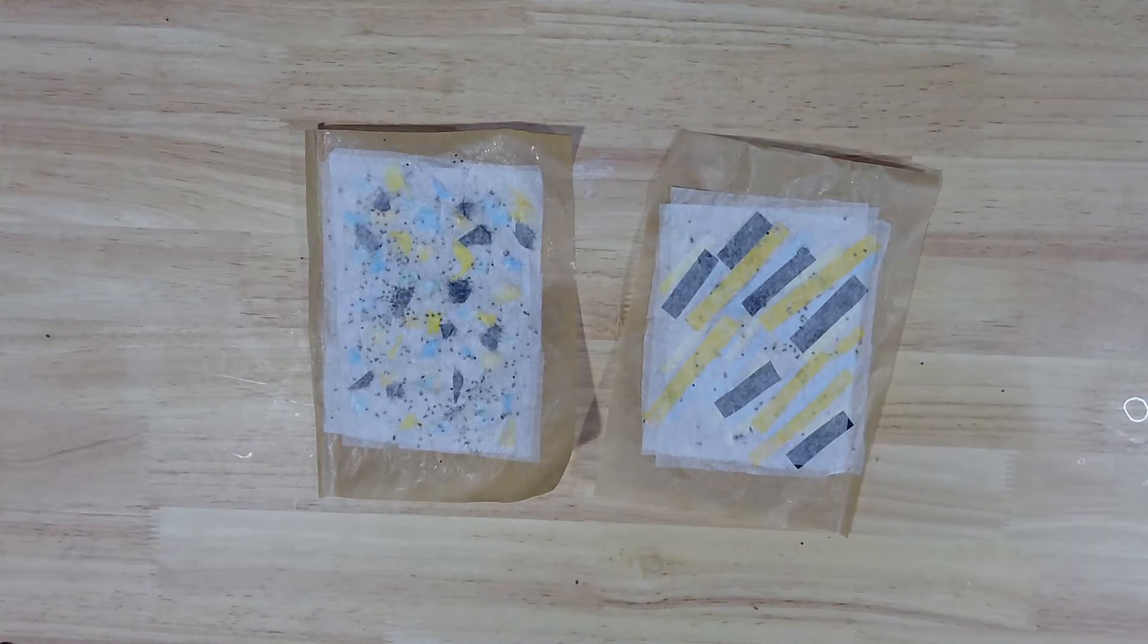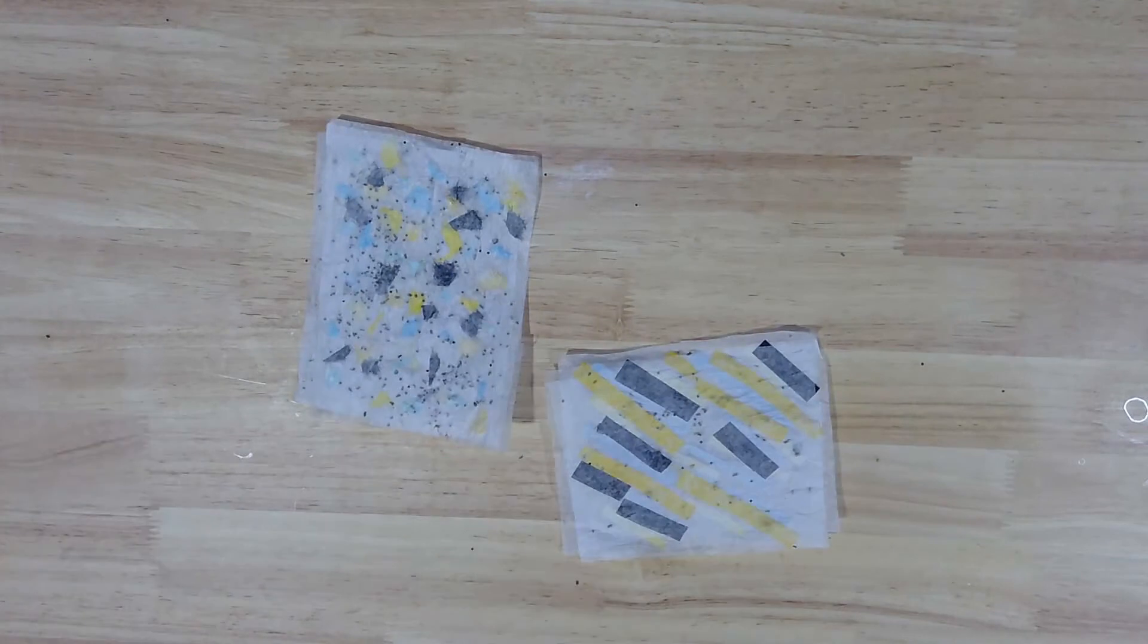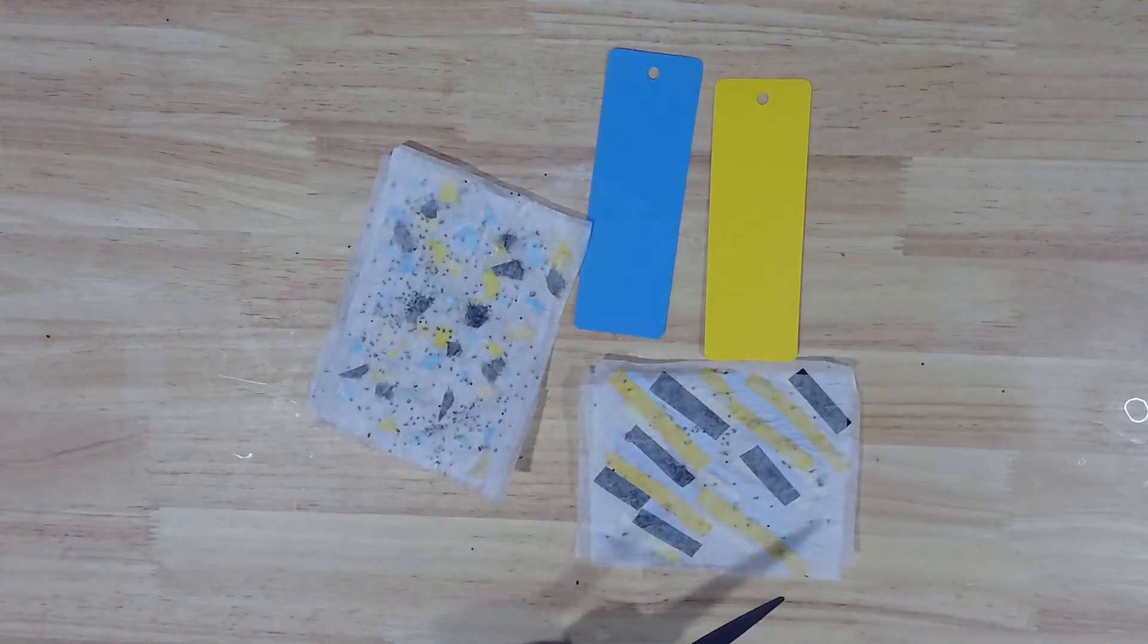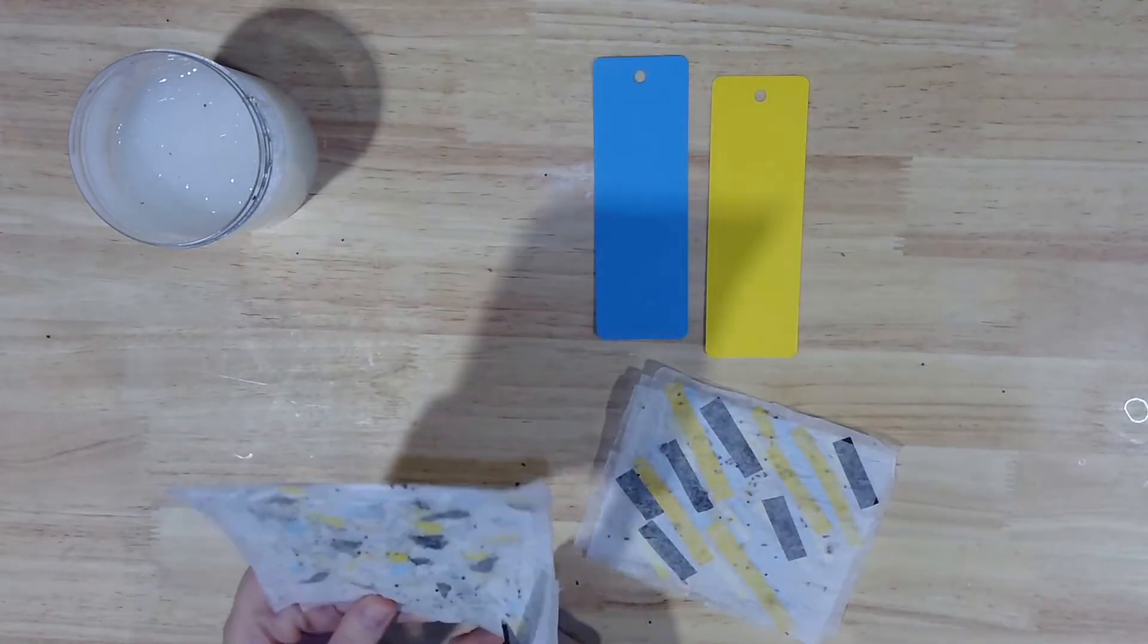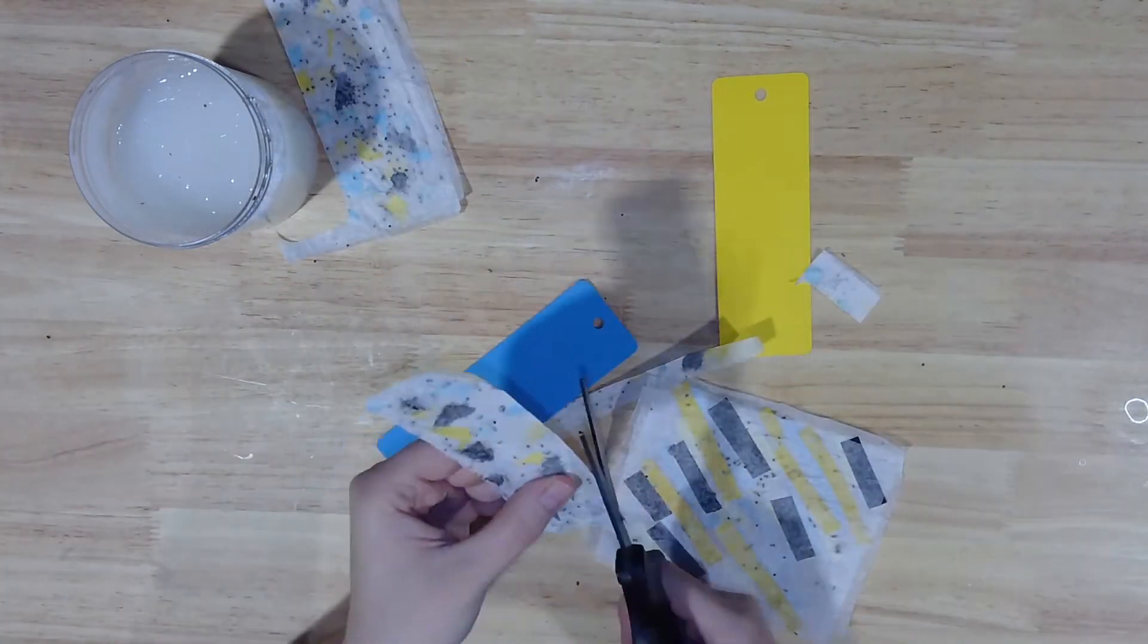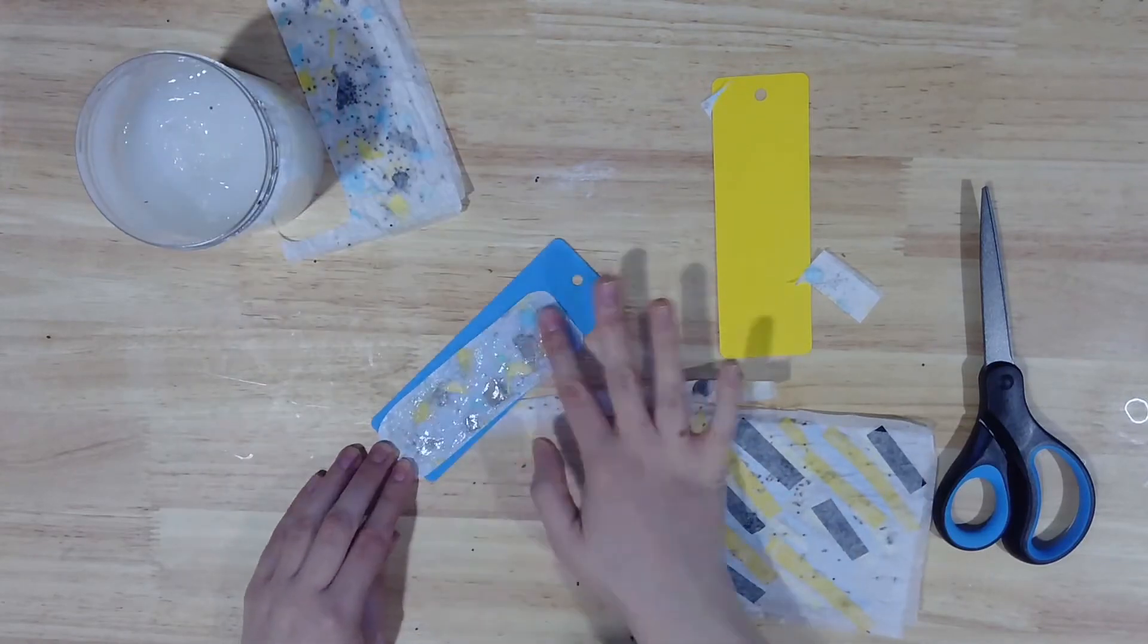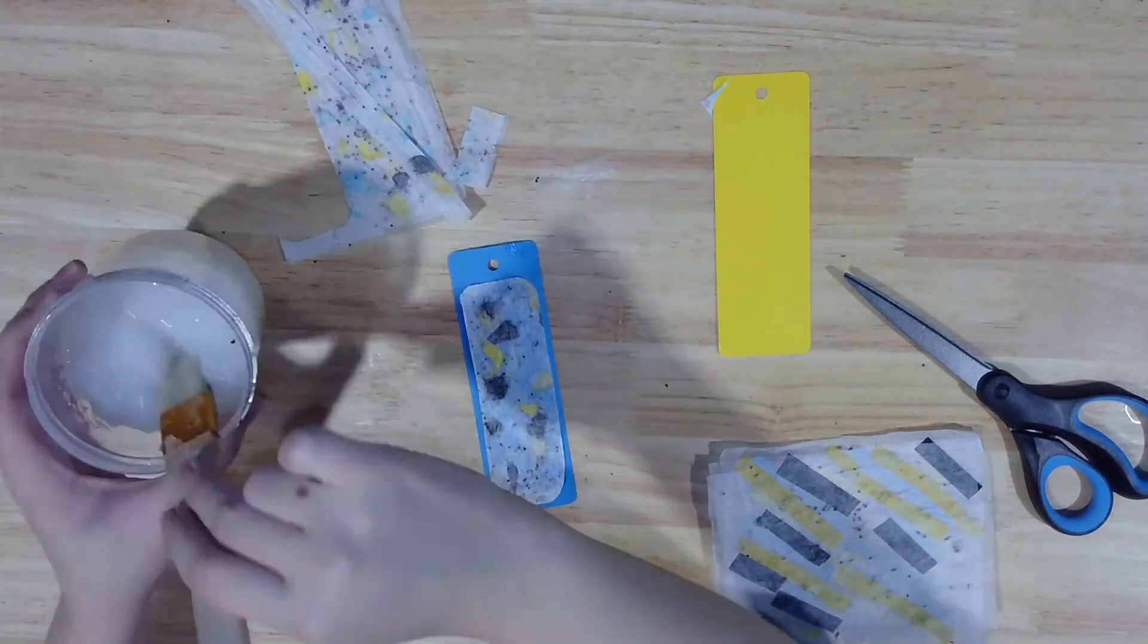Once your paper is completely dry, you can peel the parchment paper off the back, then grab your pre-cut bookmarks, cornstarch glue, paintbrush, and a pair of scissors from home. You can cut your paper into a single sheet that fits your bookmark or into shapes or letters to decorate with and attach them with your cornstarch glue. You can even use your bookmark as a template and cut another whole bookmark made entirely out of seed paper.